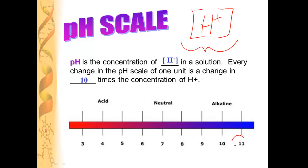So if you move from a pH of 11 to a pH of 10, there are 10 times more hydrogen ions in the solution.